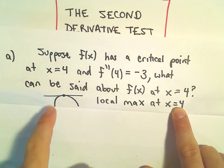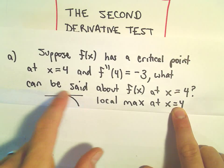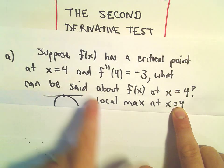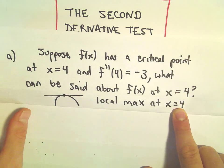So since the second derivative is negative, that's telling us that the function is concave down. And with that being a critical point, that's going to tell us that we do have a local maximum.